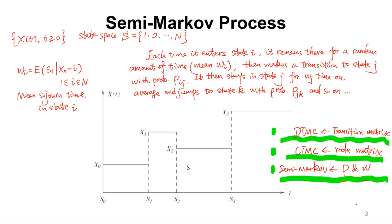Let's have a look at the definition of a semi-Markov process. We have xt, t greater than or equal to 0, with state space equal to 1, 2, and 2n. Each time the process enters state i, it will remain there for a random amount of time with mean sojourn time wi, then make a transition to state j with probability pij, then stays in state j for wj time on average, and jumps to state k with probability pjk, and so on.